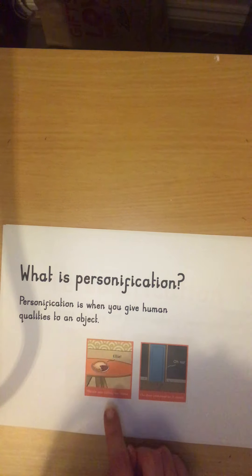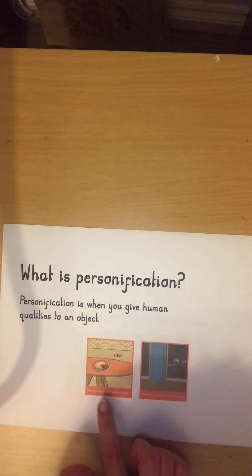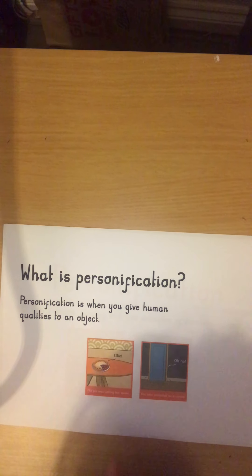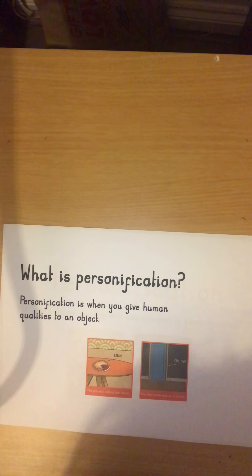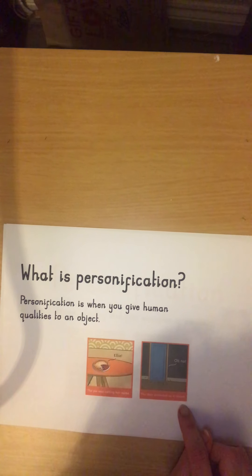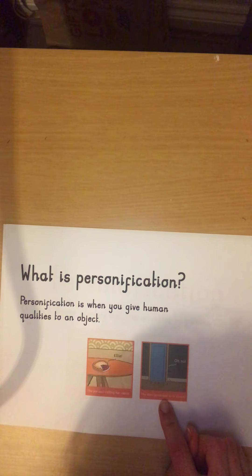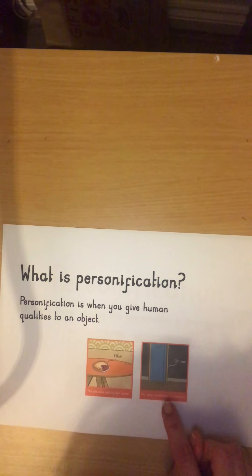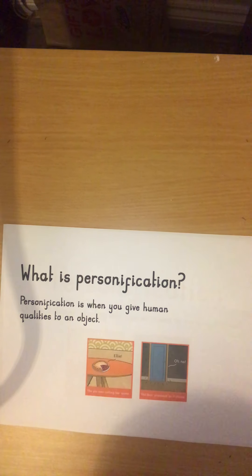Here's an example: 'The pie was calling her name.' A human quality here is 'calling' because only humans can call somebody's name — the pie can't. So in this instance, the pie has been given a human quality. Here's another: 'The door protested as it closed.' Doors can't protest; only humans can. In this case, the door has been given a human quality. Let's have a look at another example.